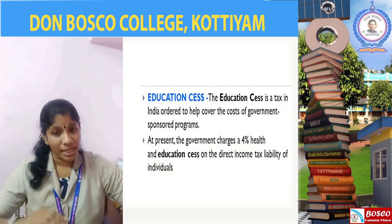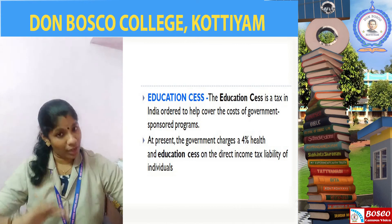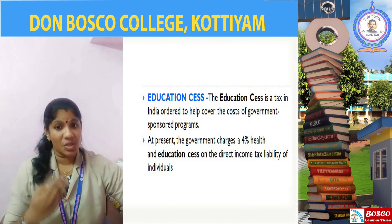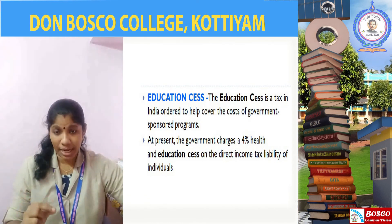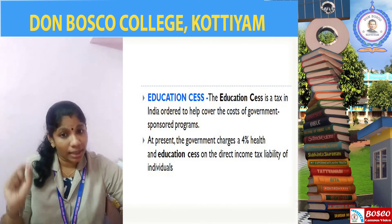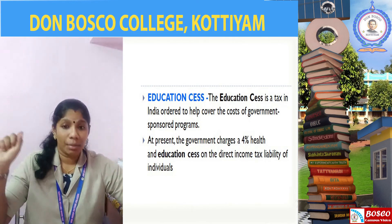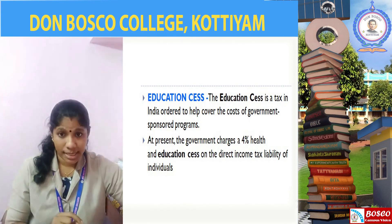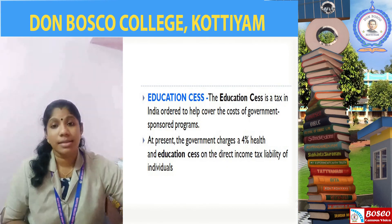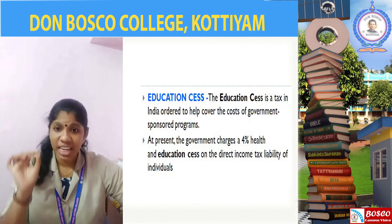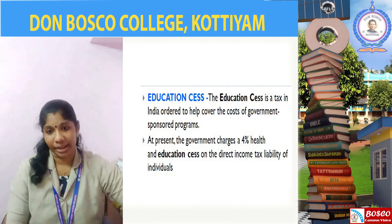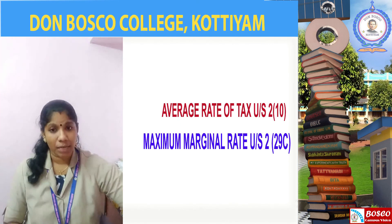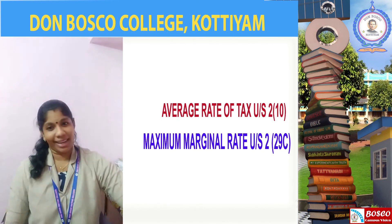So putting it together: 30% (the highest slab rate) plus surcharge plus 4% education cess gives us the maximum marginal rate of 35.88%. So these are the two important basic terms — average rate of tax and maximum marginal rate — under the Income Tax Act. Thank you all, viewers.